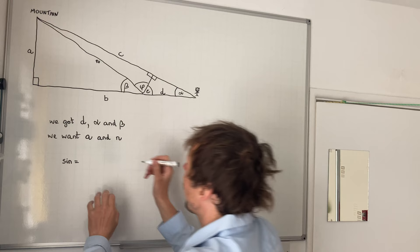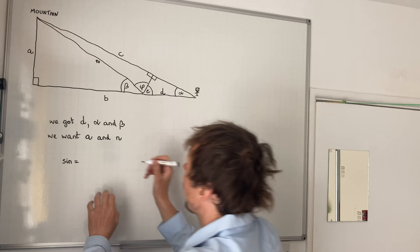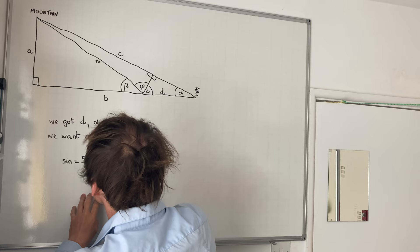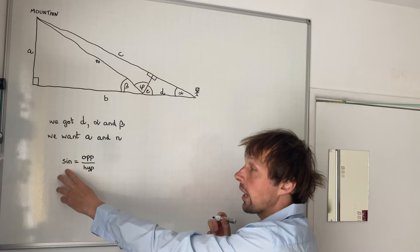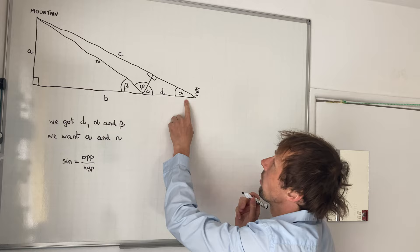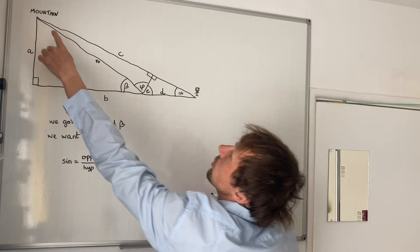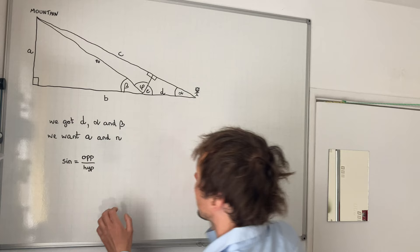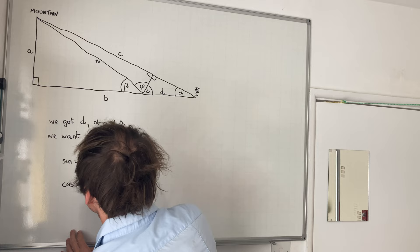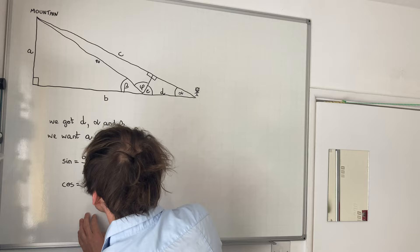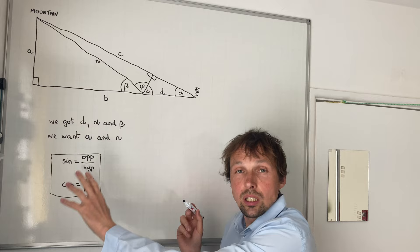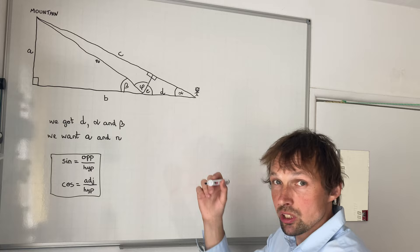To calculate those values we use simple trigonometry. We need two formulas: sine equals opposite side divided by hypotenuse — for example, sine of alpha equals a divided by c. The other formula is cosine, which equals adjacent side divided by hypotenuse. That's all we need — these two simple formulas to calculate mountain size and distance.